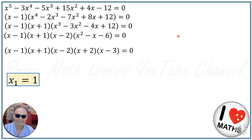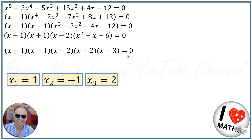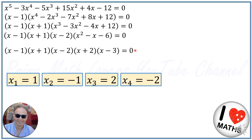So we write this as x plus 2 times x minus 3. When we have 5 factors multiplied together resulting in 0, each individual factor must equal 0. Therefore: x minus 1 equals 0 means x equals 1; x plus 1 equals 0 means x equals negative 1; x minus 2 equals 0 means x equals 2; x plus 2 equals 0 means x equals negative 2; and x minus 3 equals 0 means x equals positive 3. These five are the roots of this 5th degree equation.